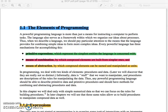Primitive expressions, which represent the simplest entities the language is concerned with, means of combination, by which compound elements are built from simpler ones, and means of abstraction, by which compound elements can be named and manipulated as units.